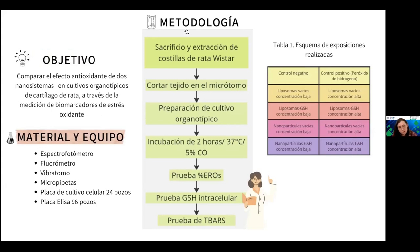Entre los materiales y equipos utilizados, a grandes rasgos fueron: espectrofotómetro, fluorómetro, vibratomo, micropipetas, placa de cultivos celular de 24 pozos y placa lisa de 96 pozos para realizar los cultivos y pruebas.